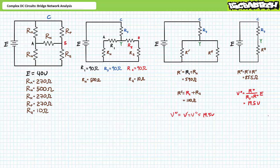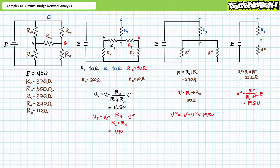Now we solve for voltage division within the R-single-prime and R-double-prime paths. Within R-single-prime, VA is the voltage across RN; R1 and RN are in series, so applying the voltage divider rule gives VA roughly 16.5 volts. Within R-double-prime, R2 and RQ are in series; applying the voltage divider rule gives VB roughly 1.9 volts. The voltage of interest, VAB, is VA minus VB. Substituting gives VAB roughly 14.6 volts, positive to negative, left to right.